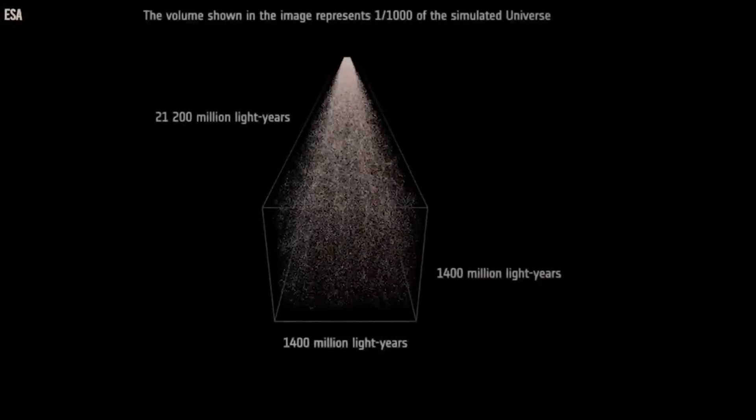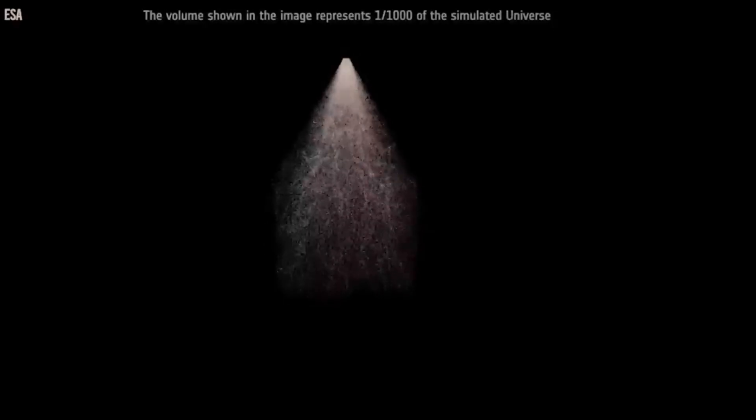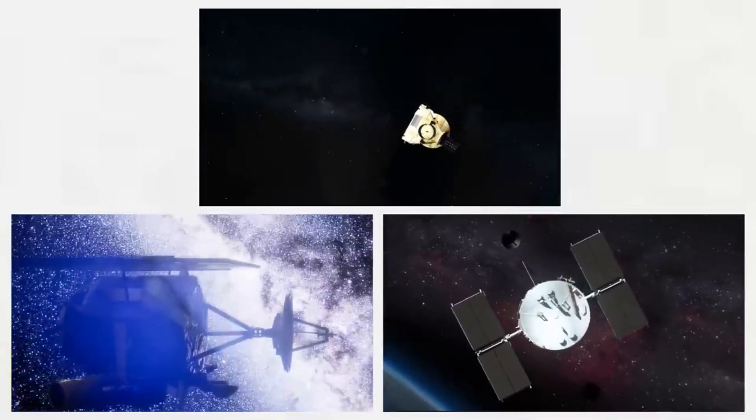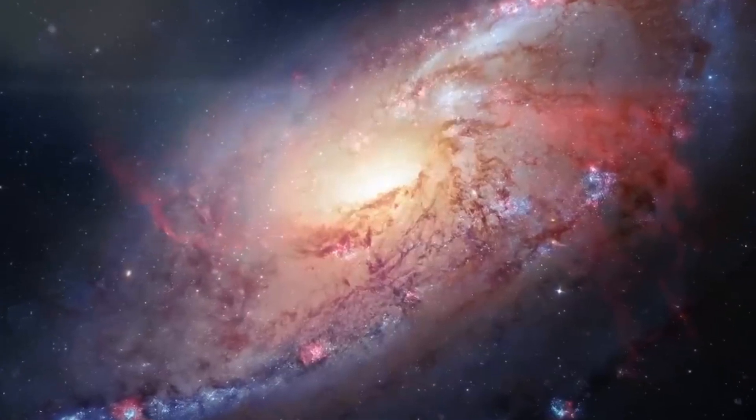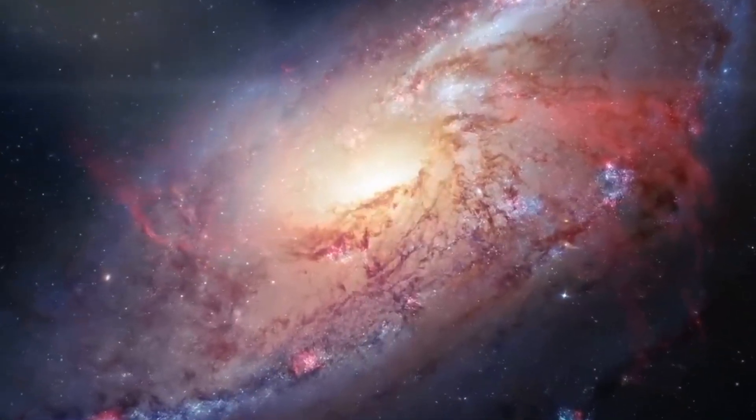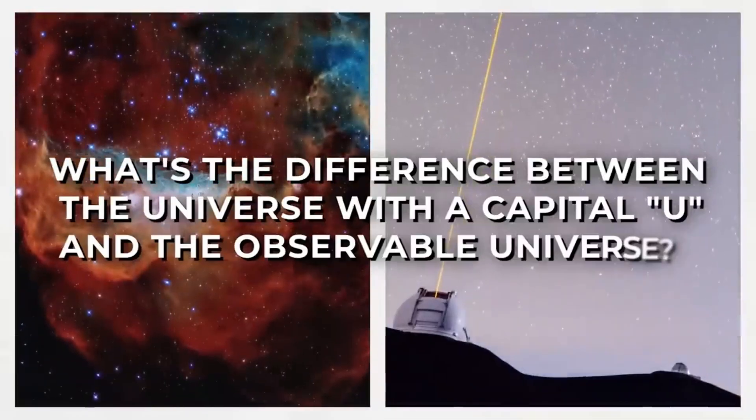Despite the vastness of the universe, it is predominantly empty. To put it in perspective, if we scaled down our entire solar system to the size of a quarter, the nearest star would still be the distance of two soccer fields away. And this is just within our Milky Way galaxy, which is one among billions in the observable universe.